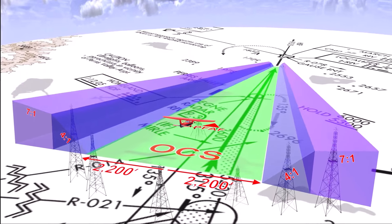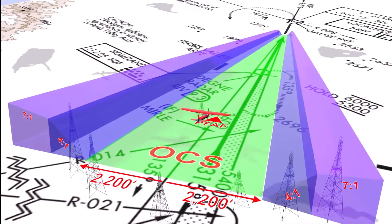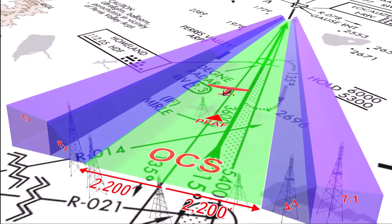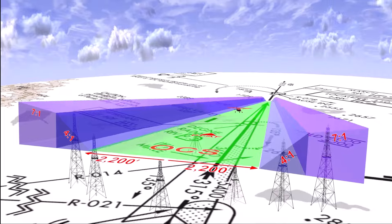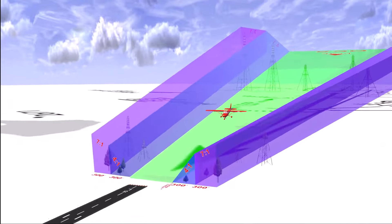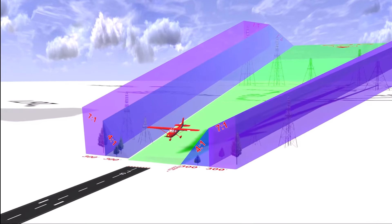As you cross the PFAS or the Precision Final Approach Fix and move toward the runway threshold, the triangular and trapezoidal geometries converge. At approximately 400 feet from the runway threshold, the 4 to 1 sloping obstacle-protected airspace begins 400 feet to either side of the course centerline.